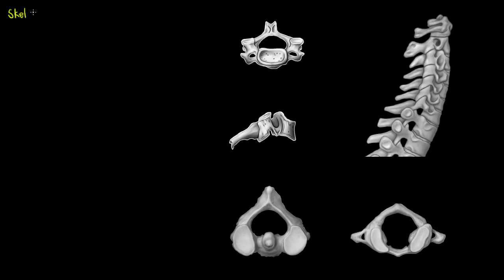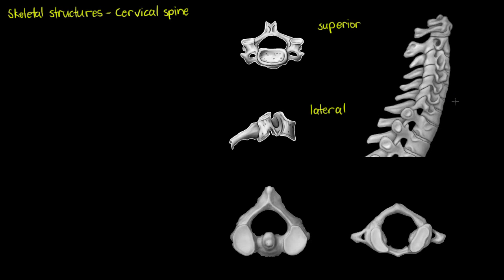Welcome to this video where we are going to be talking about our spine again, and today we're going to be talking about our cervical spine, or the most superior section of your vertebral column. I've got a few different drawings up on the screen because our cervical spine has a few unique features associated with it. We have superior and lateral views, as well as a lateral view of our full cervical spine, and also a superior view of our atlas and axis, which are the unique vertebrae of our cervical spine.